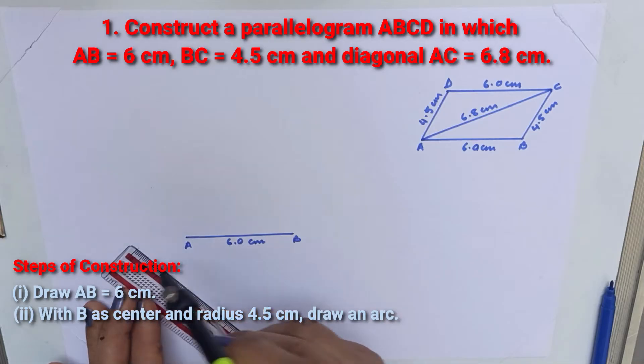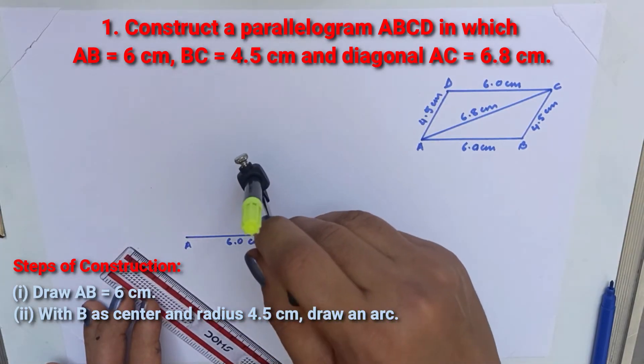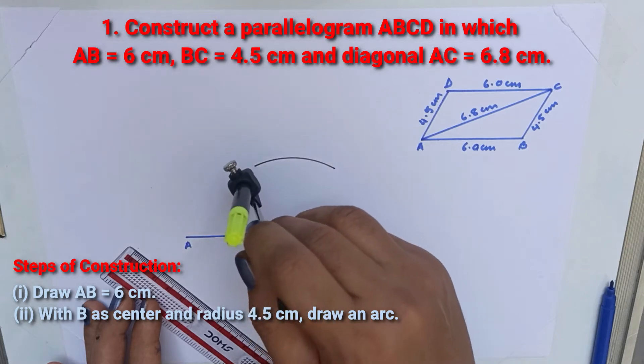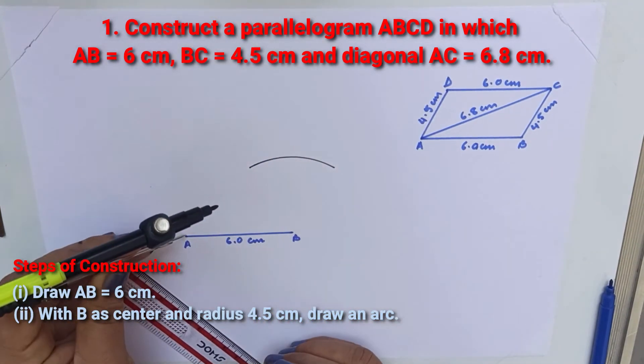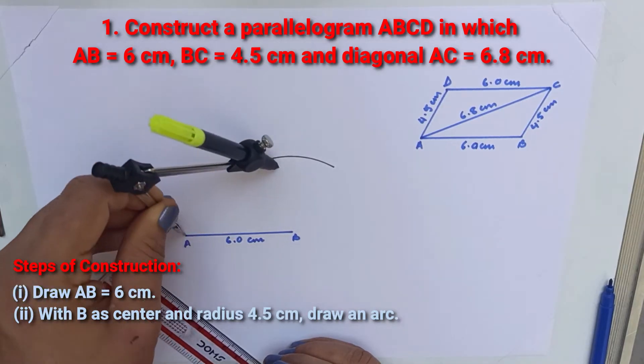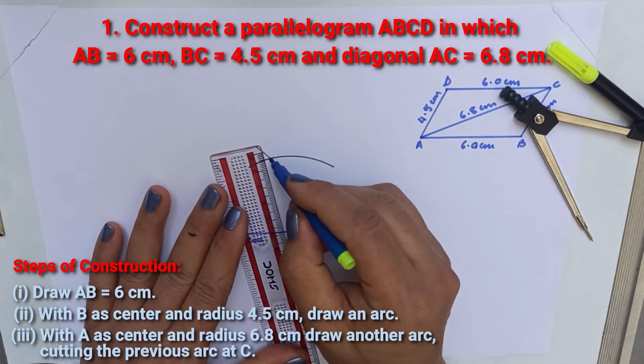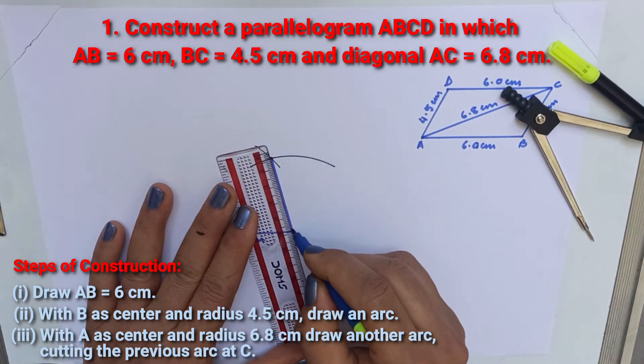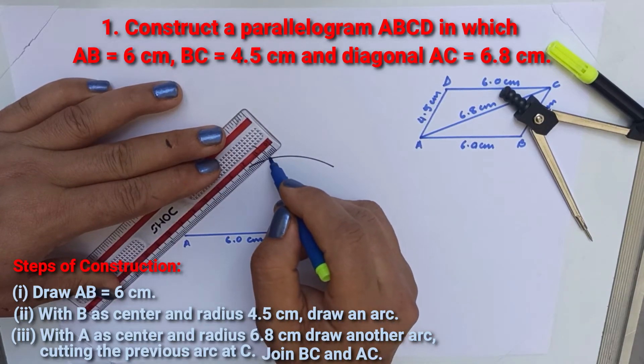Open the compass equal to 4.5 cm with B as center, draw an arc with radius equal to 6.8 cm and A as center, draw another arc cutting previously drawn arc. Join the intersecting point with B and A.